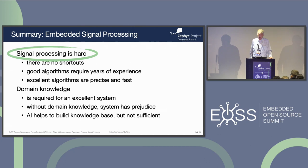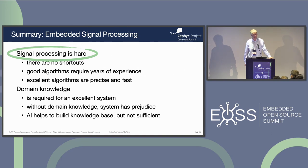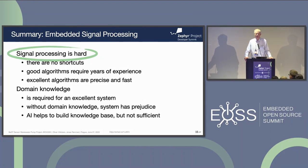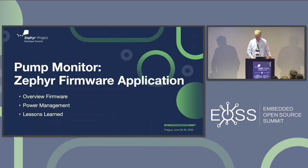To summarize: signal processing is hard. There are no shortcuts. If you want to do a good signal processing system, you need years of experience, sometimes decades — in the automotive or medical industry there are usually people with decades of experience. Excellent algorithms are precise and fast but not easy to develop. Domain knowledge is also relevant: you have to know your profession. If you work with wastewater, you need some understanding of pumps and the situation on site. Artificial intelligence can help to build a knowledge base and can help a lot, but for itself it is not sufficient. And with that, I'll hand over to Jonas.